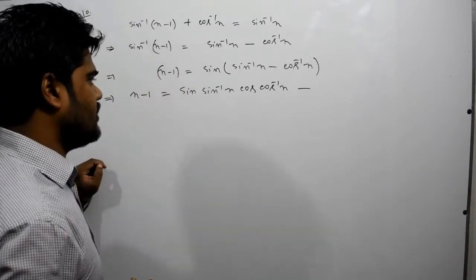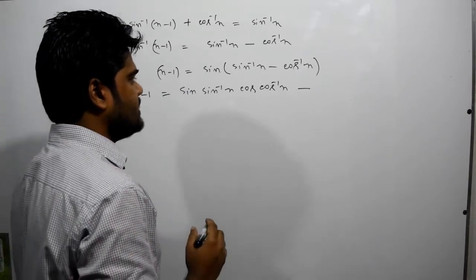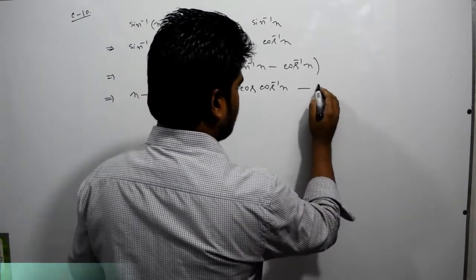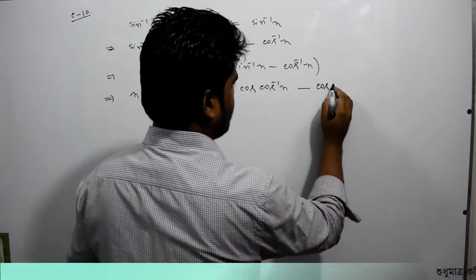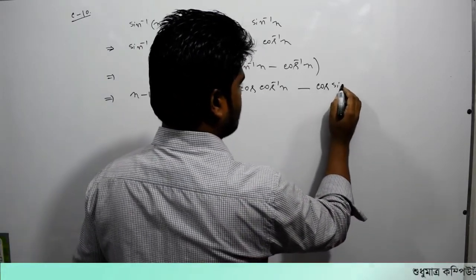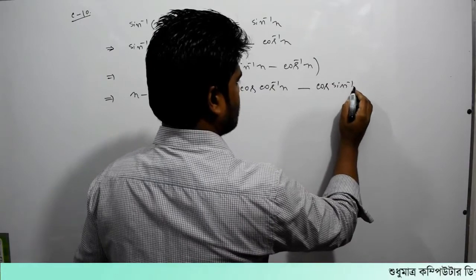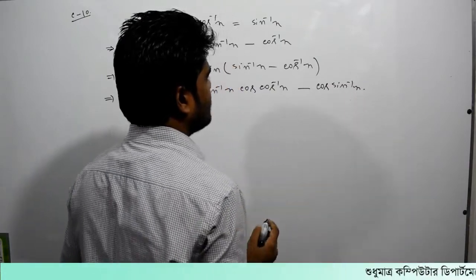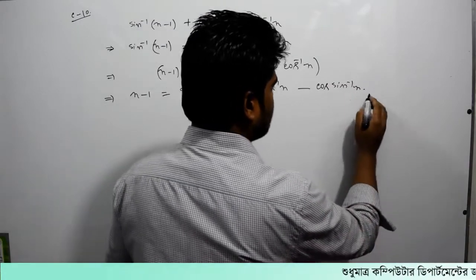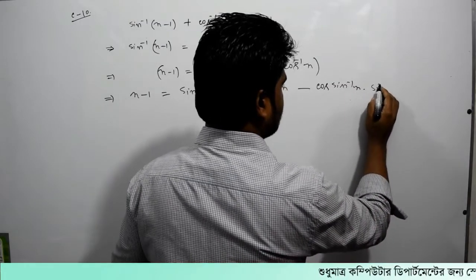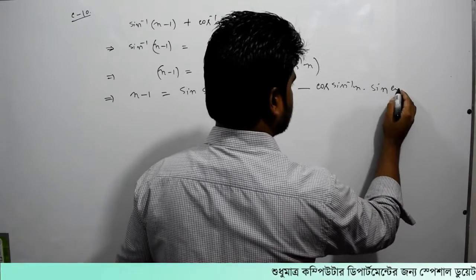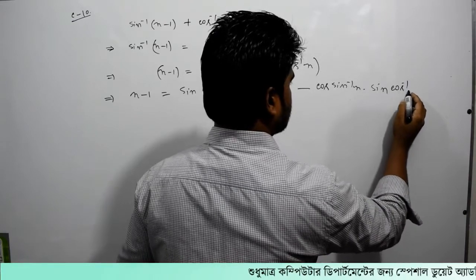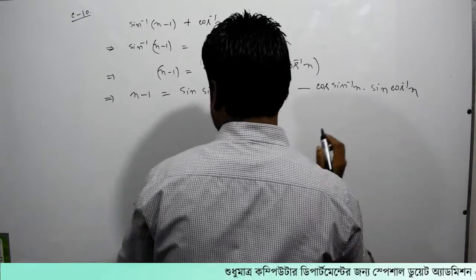sin a cos b — এখানে cos b কুন্টা হবে cos inverse x। এবার কী হবে cos a sin b — তাহলে cos a কুন্টা হলো sin inverse x। এবার sin b কুন্টা ইজে এটা cos inverse x।